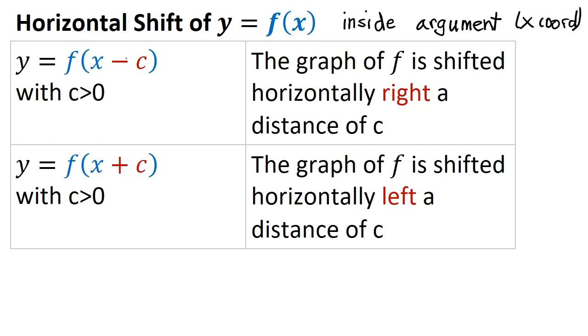If we subtract, I sometimes call this opposite land. It's the opposite of what your brain wants. But the way to think about it is what would I have to do to x minus c to get back to x? I'd have to add c, so the graph is shifted horizontally to the right a distance of c. If I have f and in the argument x plus c, what would I have to do to x plus c to get it back to x? I'd have to subtract c, so the graph is shifted horizontally left a distance of c.